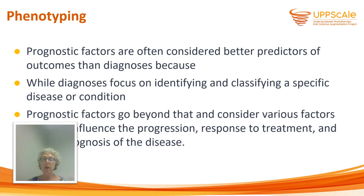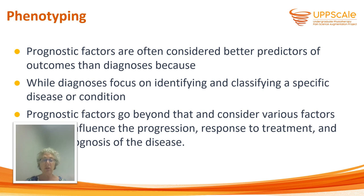One way to get to subgroups is classifying on prognostic factors. Prognostic factors are often considered better predictors of outcome than diagnosis, because while diagnoses focus on identifying and classifying a specific disease or condition, prognostic factors go beyond that and consider various factors — often specific to the individual — that can influence the progression, response to treatment, and overall prognosis of the disease.